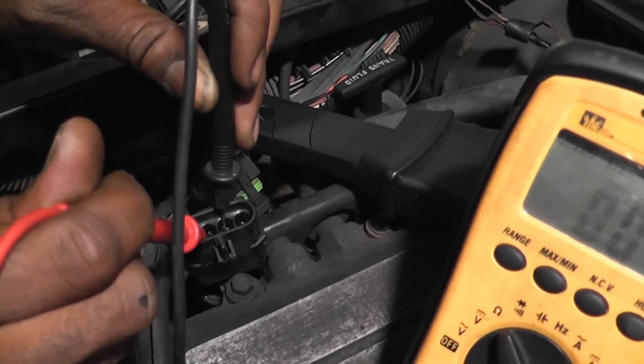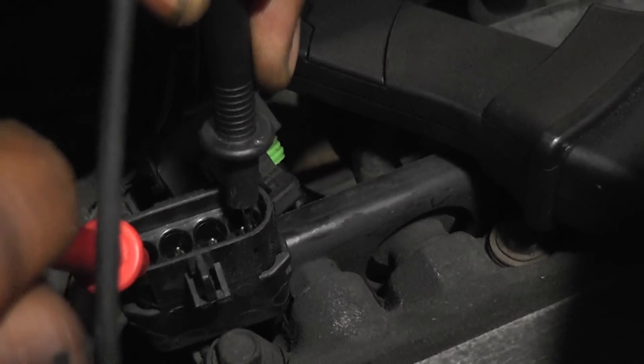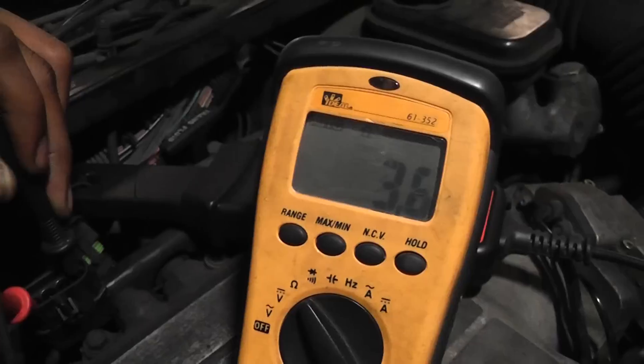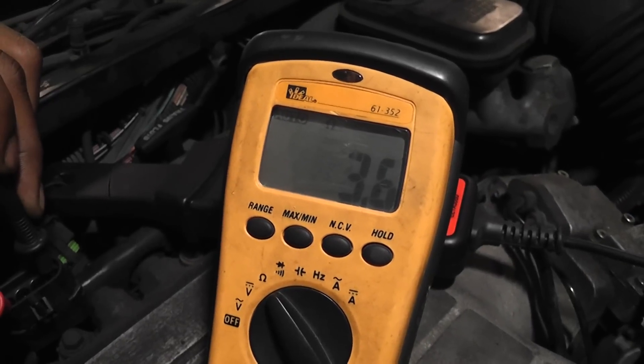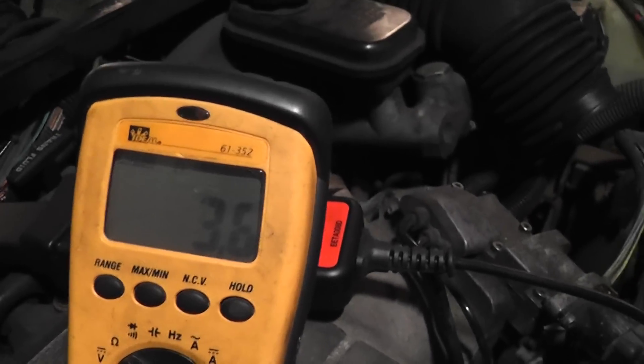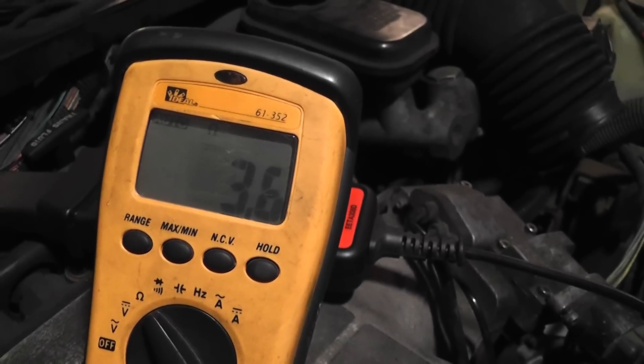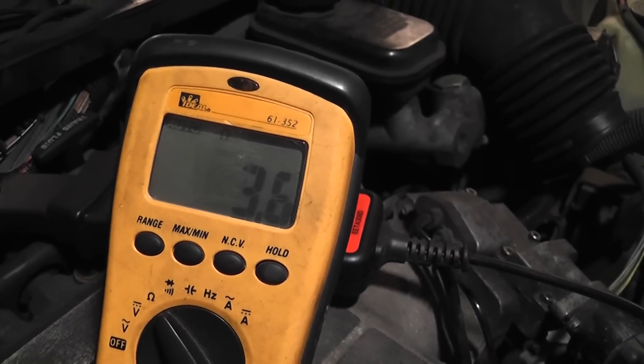Go ahead and do the outer two first. Polarity doesn't matter with the ohmmeter. Go to the outer two pins. Okay, with our spec being four to five ohms, you can see that our good bank of three is showing low resistance. We have 3.6 ohms, but you know what, that's a crappy test if you think about it.